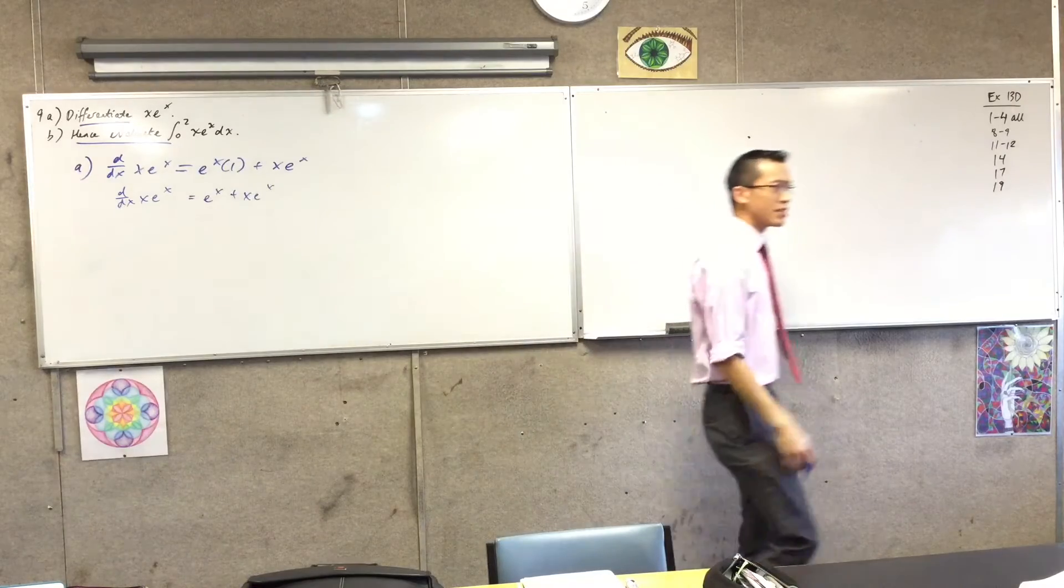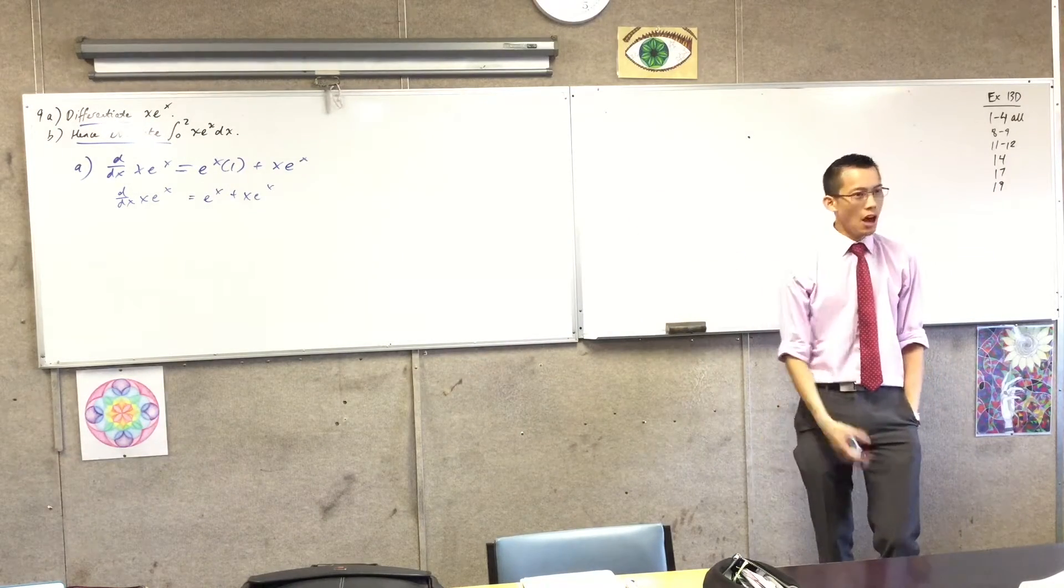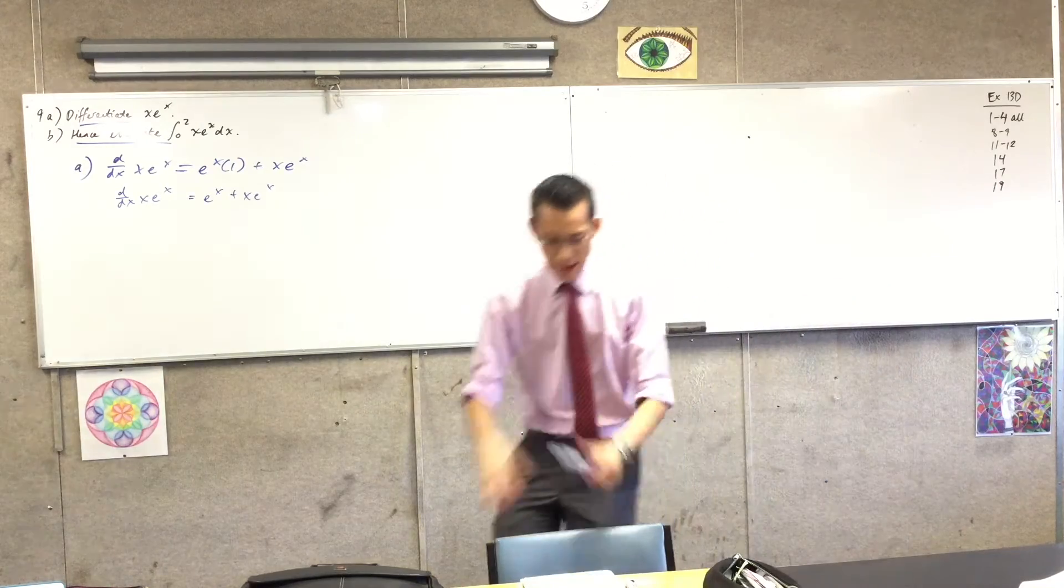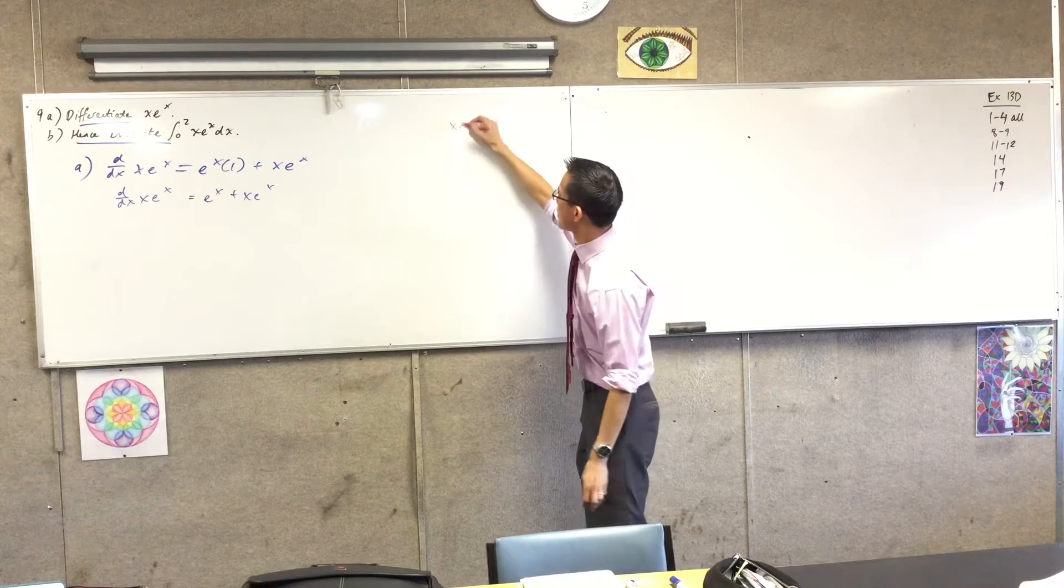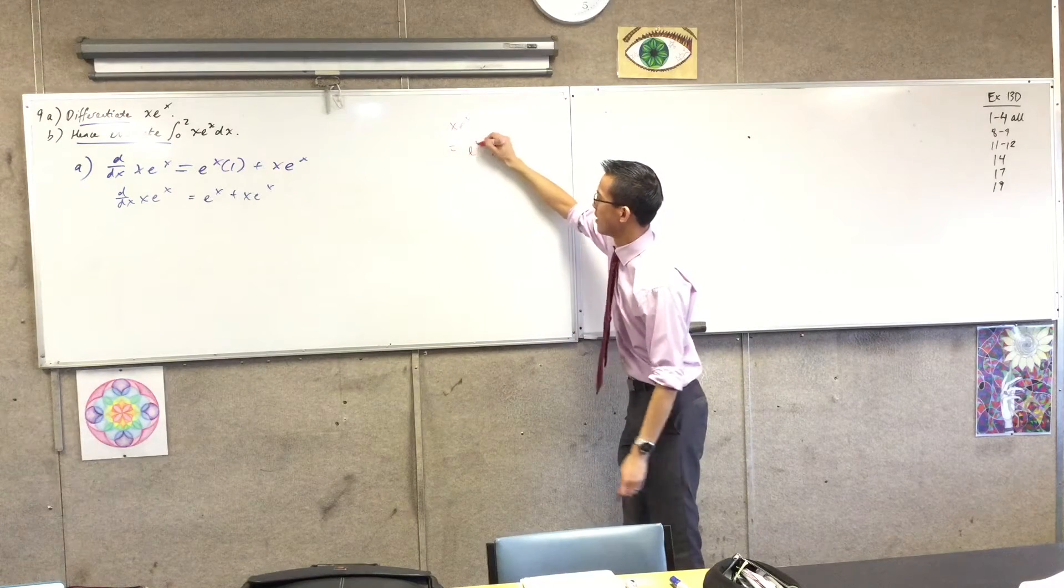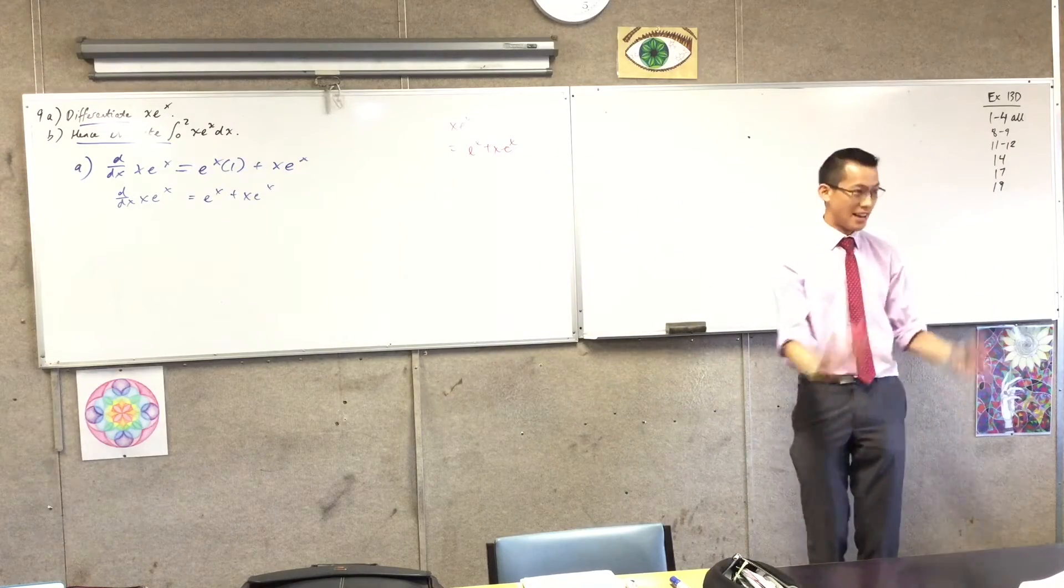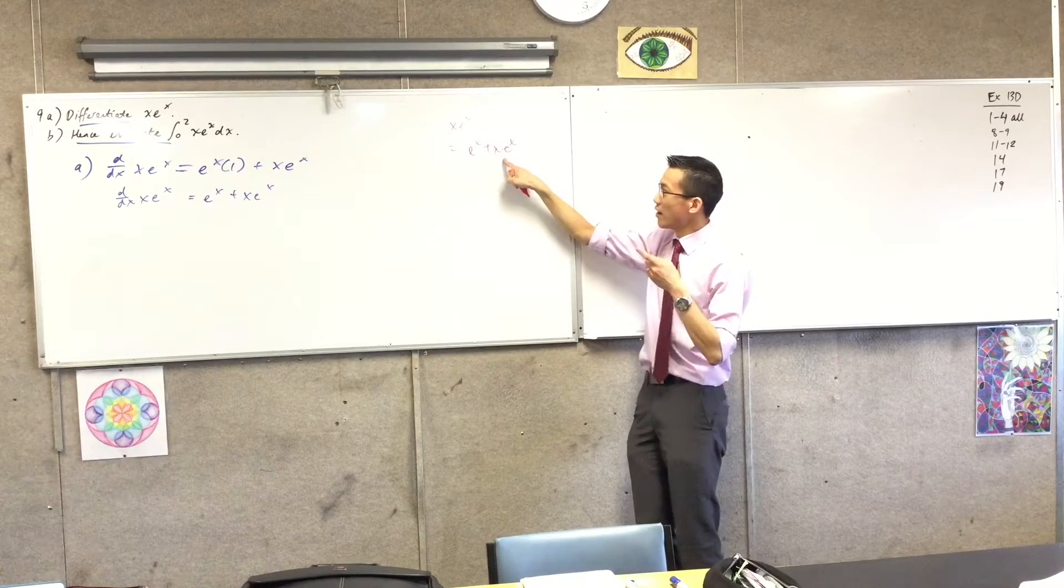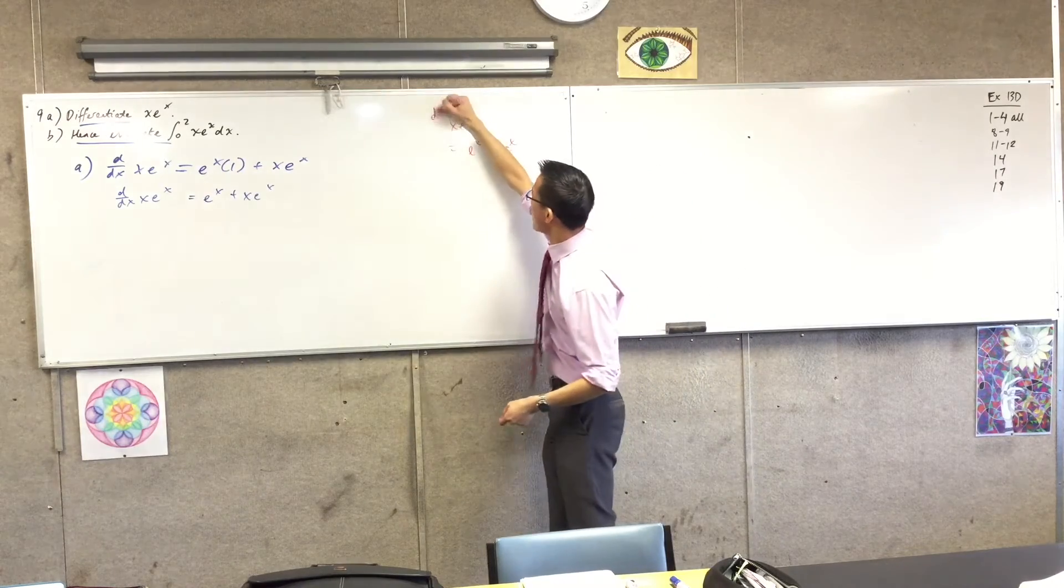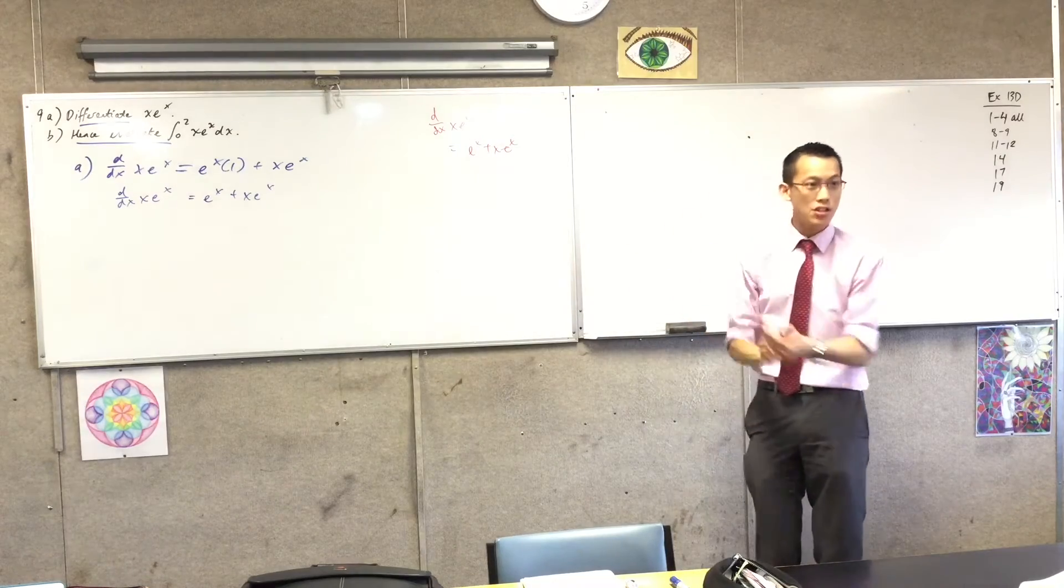Now, by the way, just as a minor point, but it actually becomes quite significant in this question. A lot of people are being a little bit lazy with their notation, and they're writing things like x·e^x equals e^x plus x·e^x. Now, obviously, what I've just written is disastrous, because quite clearly this is not equal to that. But the fact that you should write d/dx out the front actually becomes instrumentally important for this question. Watch.